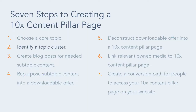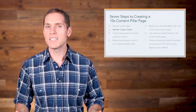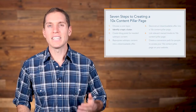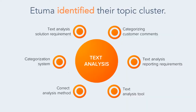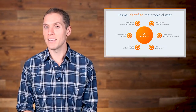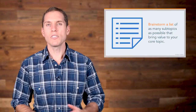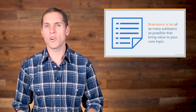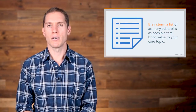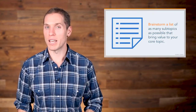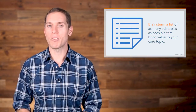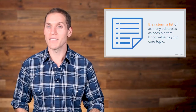Second, Etuma identified their topic cluster. You may already have content created in support of your core topic. Instead of reinventing the wheel, identify current owned media that's relevant to your core topic. In this case, Etuma already had four pages of text analysis-themed blog content and a series of YouTube videos. And while it may be great that you already have subtopic content created, don't sell your business short. Brainstorm a list of as many subtopics as possible that bring value to your core topic and have yet to be published. Once you make a comprehensive list of subtopics, narrow it down to the six strongest subtopics that support your core topic and its pillar page. Remember, you can continue growing your pillar page, so having a list of subtopics already identified will help make that process easier. That comprehensive list you made is the content gift that keeps on giving.